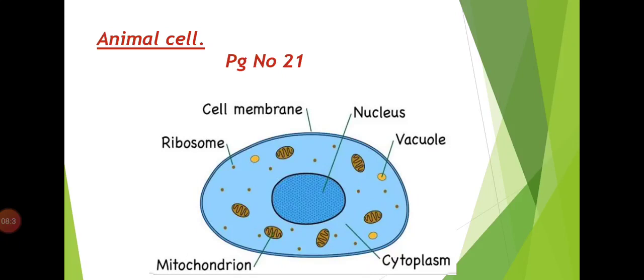Yaha par aapko jo picture provide ki gayi hai, there is an animal cell. The main parts of the cell are the nucleus, cytoplasm, cell membrane, and the vacuole. There are some important parts of animal cells. Now we learn about the function of each part.